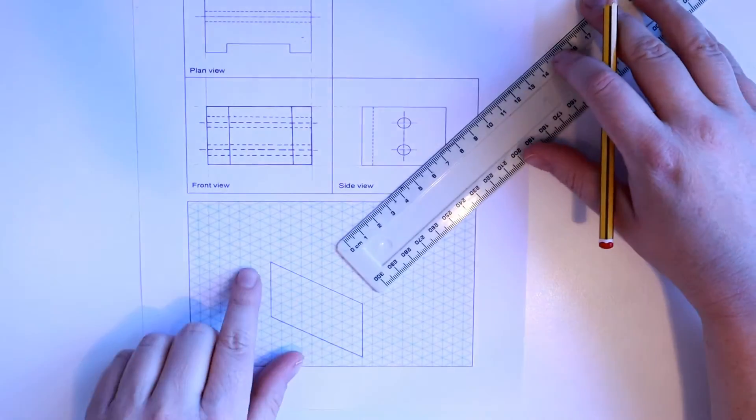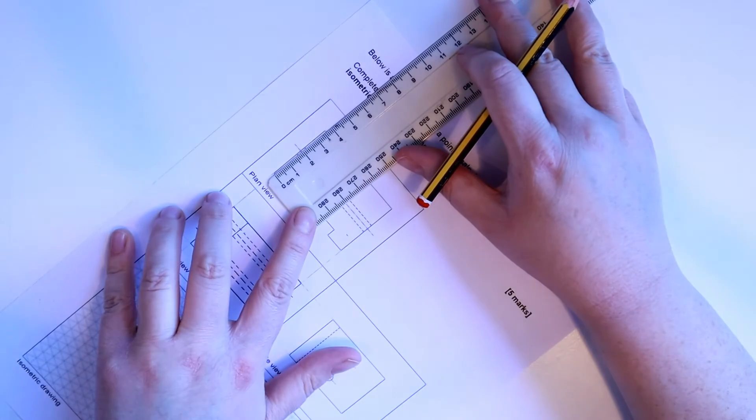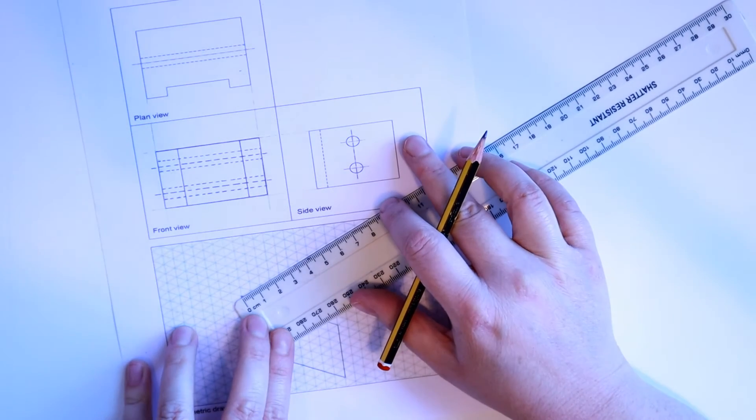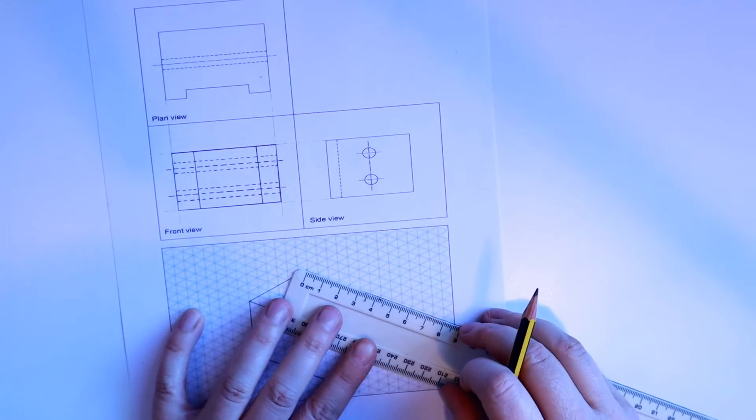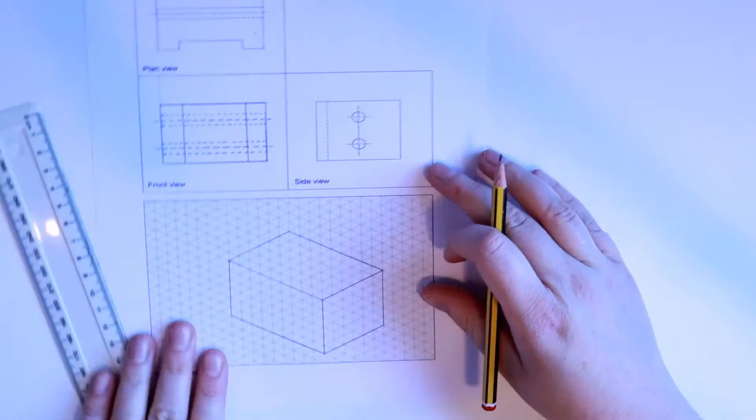So the depth, so I know how big to make the top. The top is here, so I'm going to measure that. That is 35, so I need to make sure I'm going 35 back. So I've got a basic isometric box here.